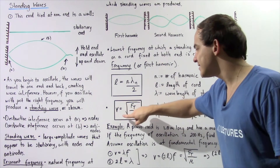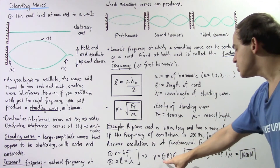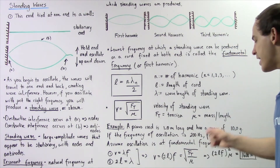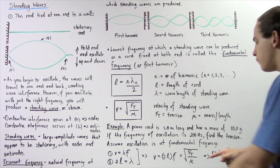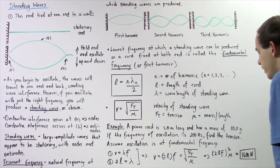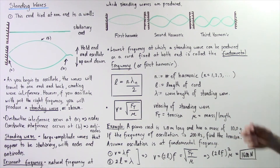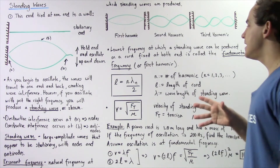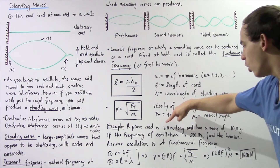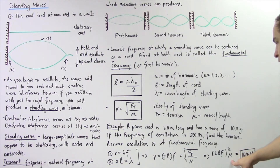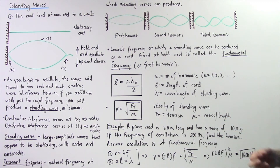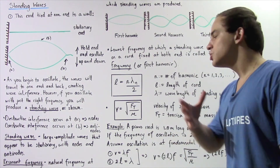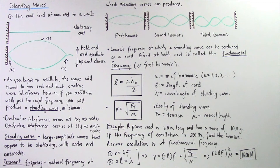We know the velocity also equals √(F_T / μ), so: 2Lf = √(F_T / μ). Squaring both sides and solving for tension: F_T = (2Lf)² × μ. Plugging in L = 1 m, f = 200 Hz, and μ = (10 g / 1000) / 1 m = 0.01 kg/m, we get a tension in the cord of 1600 newtons.